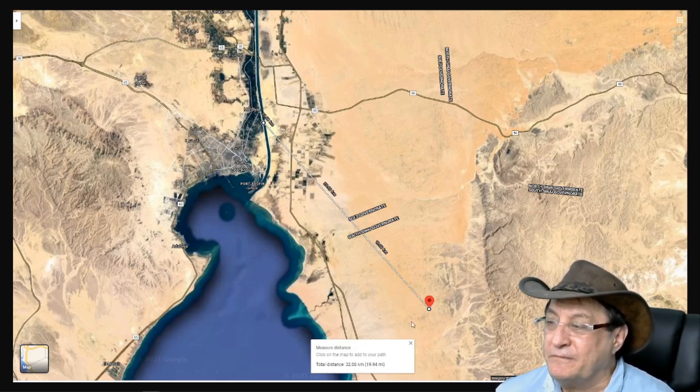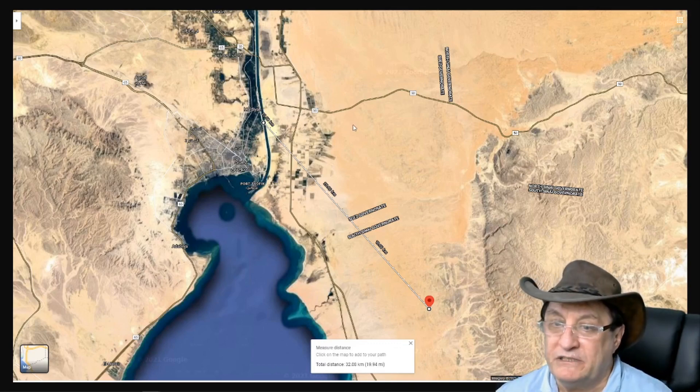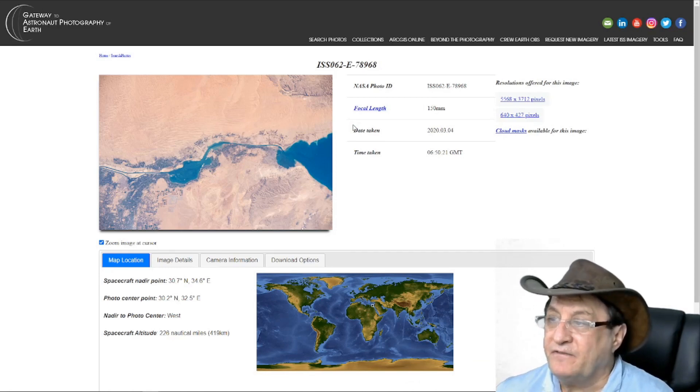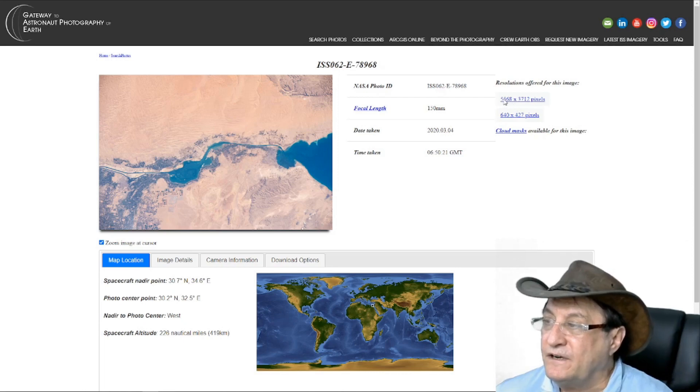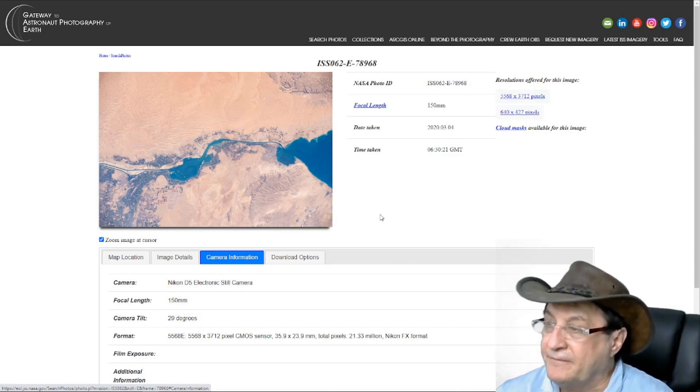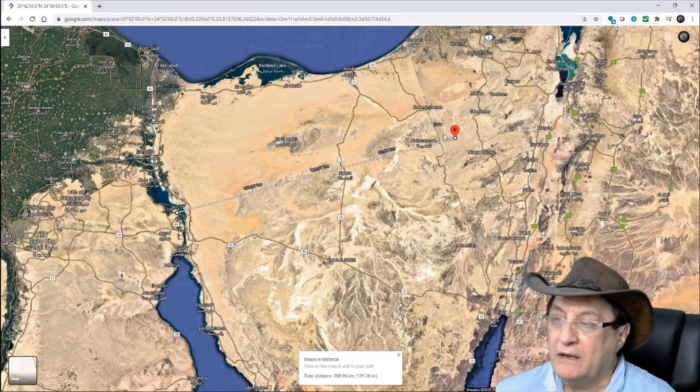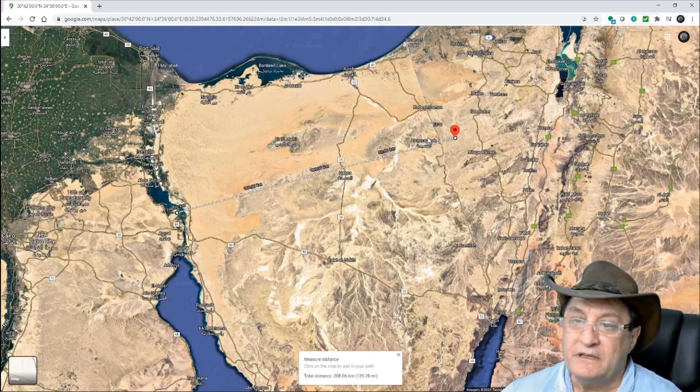Now the spacecraft at the time of taking the photo was above this point on the ground down here. So it was only 32km from the ship that it was taking a picture of. Now the other photo was a wider shot of the length of the Suez Canal. And this is a full resolution photo. 5568 by 3712 pixels. And the camera this time is a Nikon D5 electronic still camera. Now the spacecraft was above this point here, 208km away when that photo was taken. So all this data is available and published. Anyone can view the photos and the data.